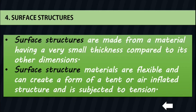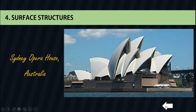This material is flexible and can create a form of a tent or air-inflated structure. In both cases, the material acts as a membrane that is subjected to pure tension. Our first example is the Sydney Opera House, a modern expressionist design with a series of large precast concrete shells, each composed of sections of a sphere forming the roofs of the structure set on a monumental podium.